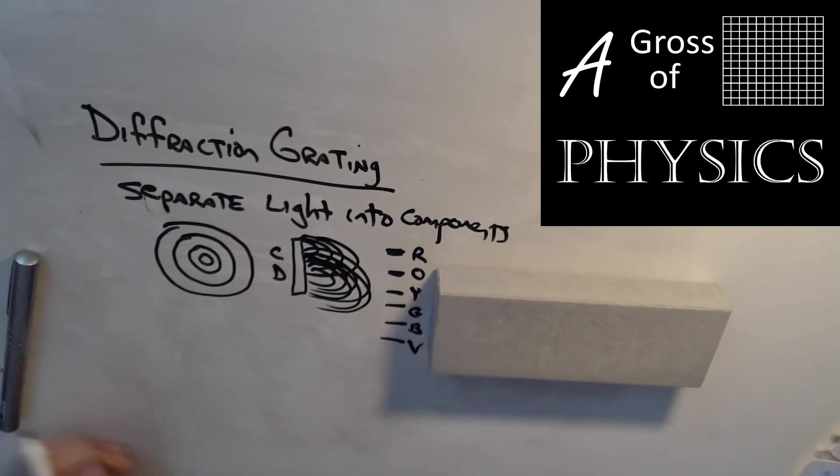So diffraction gratings, if we had an element, we could actually break it up into its fingerprint, which would determine what element we have because every element has its own unique set of lines that it produces because of the electron configuration. That's a diffraction grating. It can be used to separate light into components.